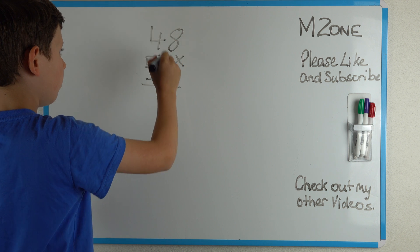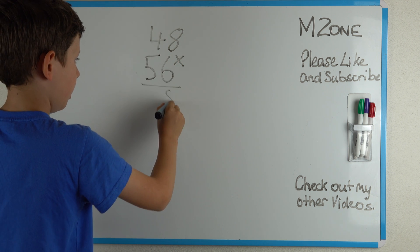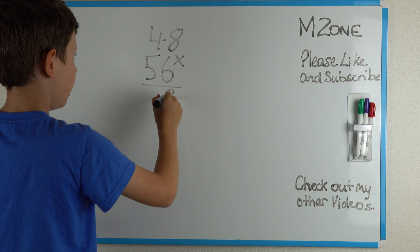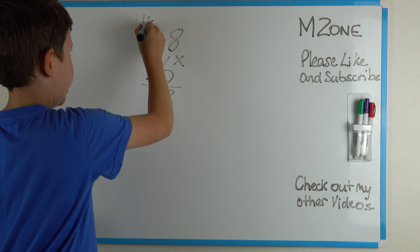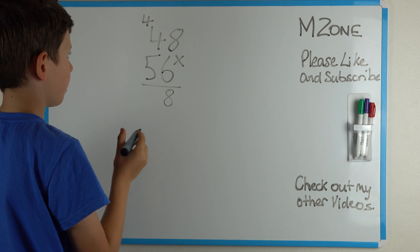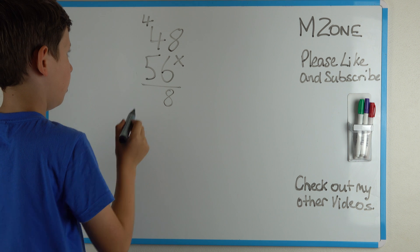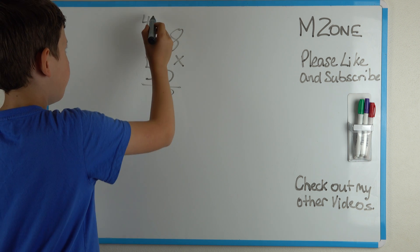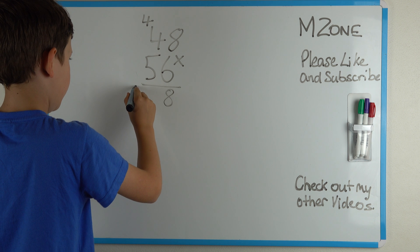8 times 6 is 48. So you add an 8 here and a 4 here. 6 times 4 is 24, plus the 4 over here is 28.